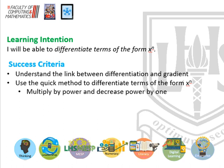We'll be able to simply differentiate terms of the form x to the power n. The two things we want to be able to do are: understand the link between differentiation and gradient, and use the quick method to differentiate terms of the form x to the power n — that involves multiplying by the power and decreasing the power by 1.